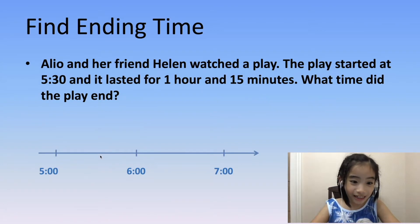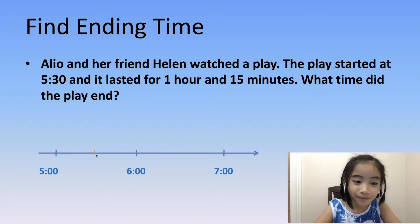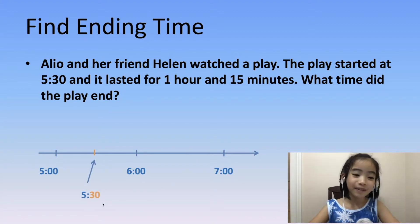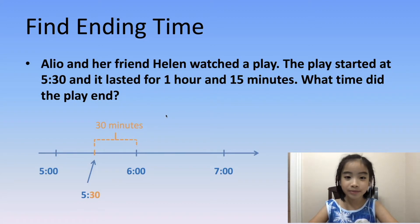5:30 is the middle of 5 o'clock and 6 o'clock, and that is this short yellow line over here. From 5:30 to 6 o'clock is 30 minutes. We know that the play lasted for 1 hour and 15 minutes.